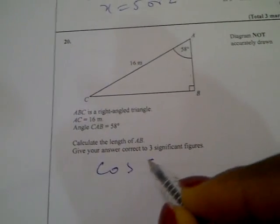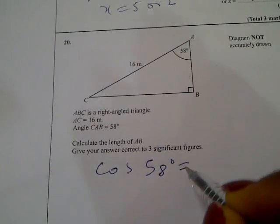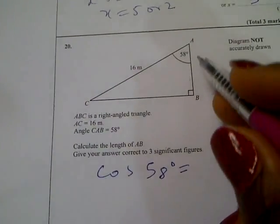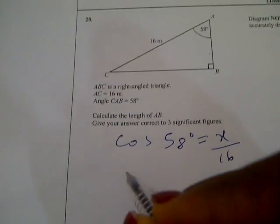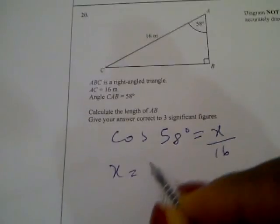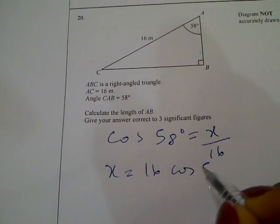That's cos 58 degrees equals adjacent, that's this that you don't know, over the hypotenuse which is 16. So X would be 16 cos 58.